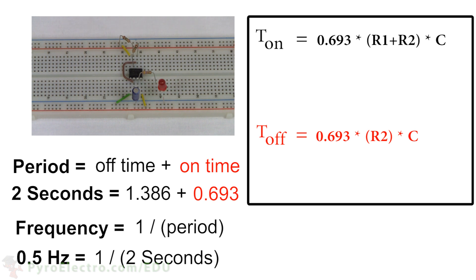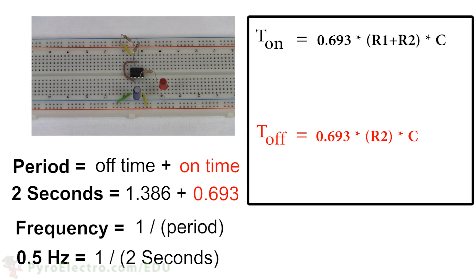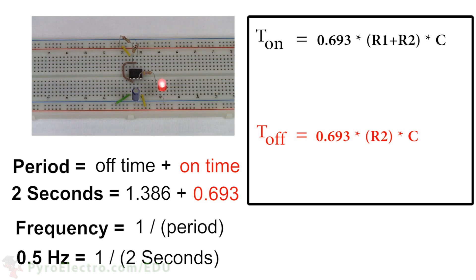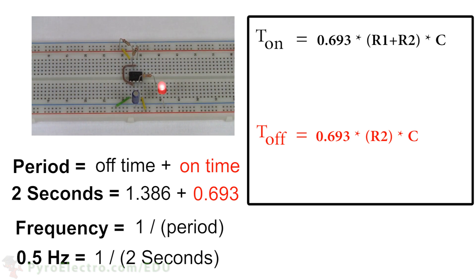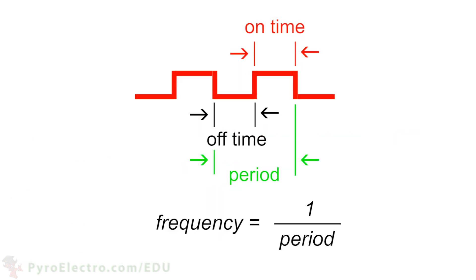Using these two formulas, you can calculate the result for different R1, R2, and C components that you use. Being able to control these on and off times is extremely important for digital circuits, because when dealing with digital signals, the timing is definitely everything. Milliseconds and microseconds can be the difference between erroneous data and real data.